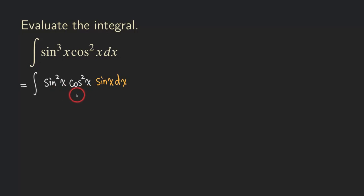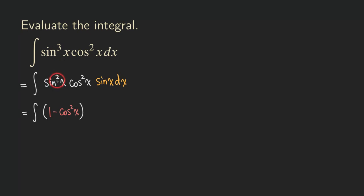Next, we are going to turn this sine squared into an expression involving cosine using the Pythagorean identity. We can rewrite sine squared x as 1 minus cosine squared x. The reason we look for the odd power is that once you reserve one copy, the odd power turns into an even power, and that even power allows us to use the Pythagorean identity to convert it to the other function.